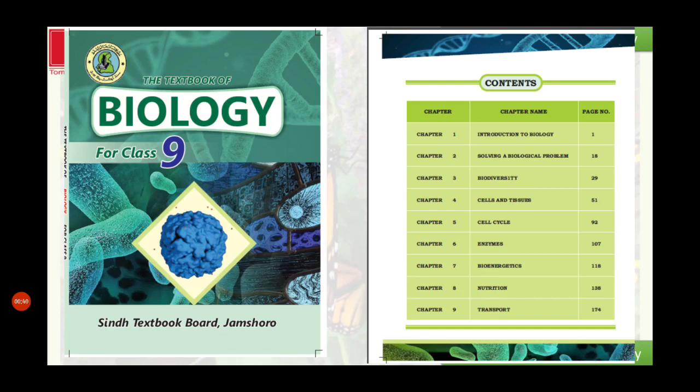This is your new textbook of biology for class 9th. It consists of 9 chapters: Chapter 1, Introduction to Biology; Chapter 2, Solving a Biological Problem; Chapter 3, Biodiversity; Chapter 4, Cells and Tissues; Chapter 5, Cell Cycle; Chapter 6, Enzymes; Chapter 7, Bio Energetics; Chapter 8, Nutrition; and Chapter 9, Transport.